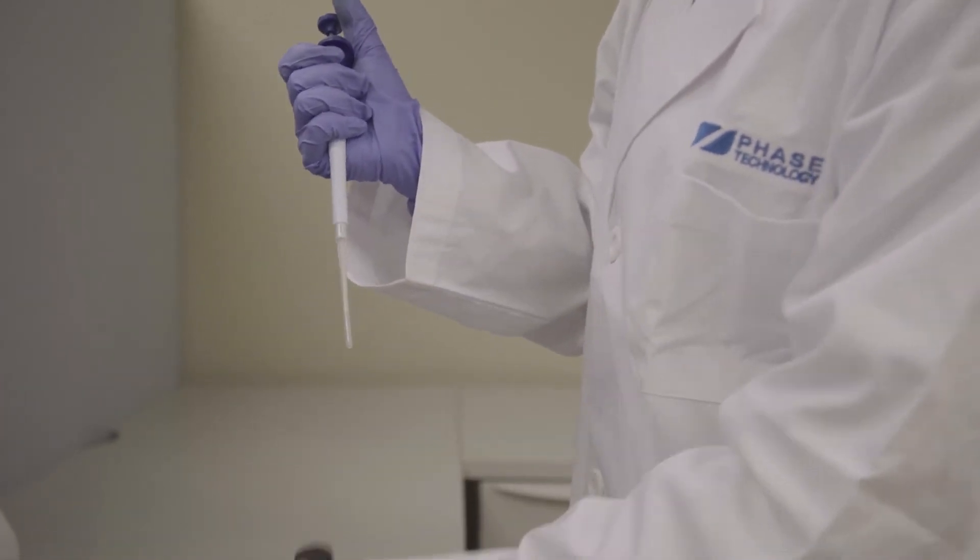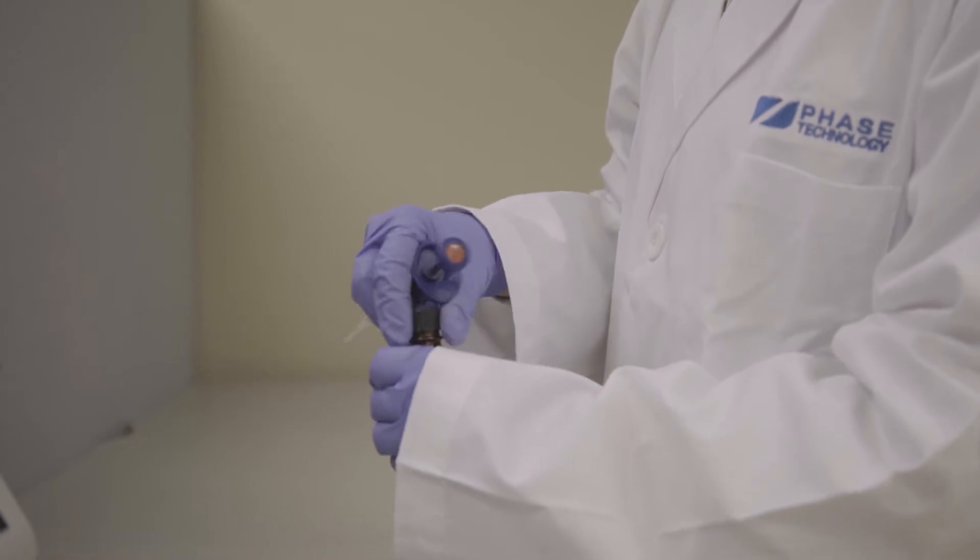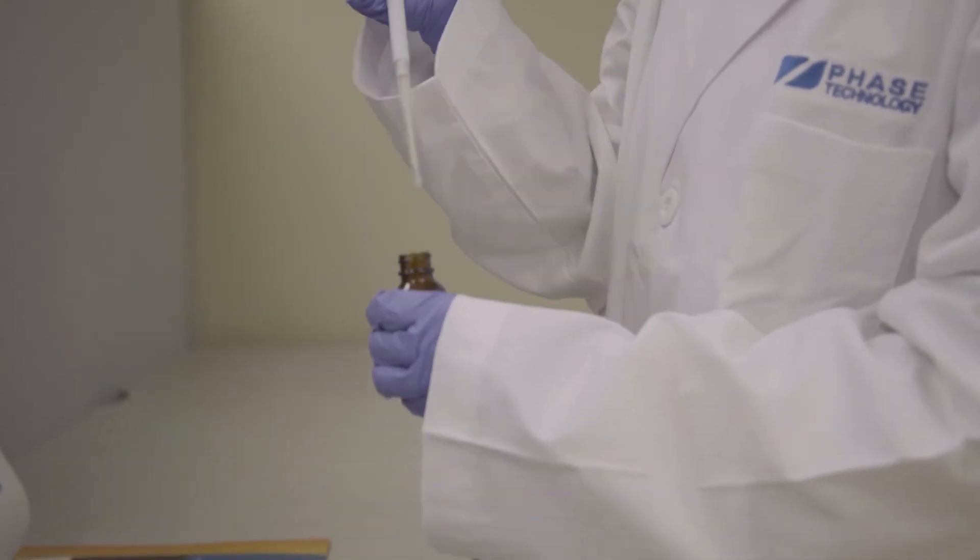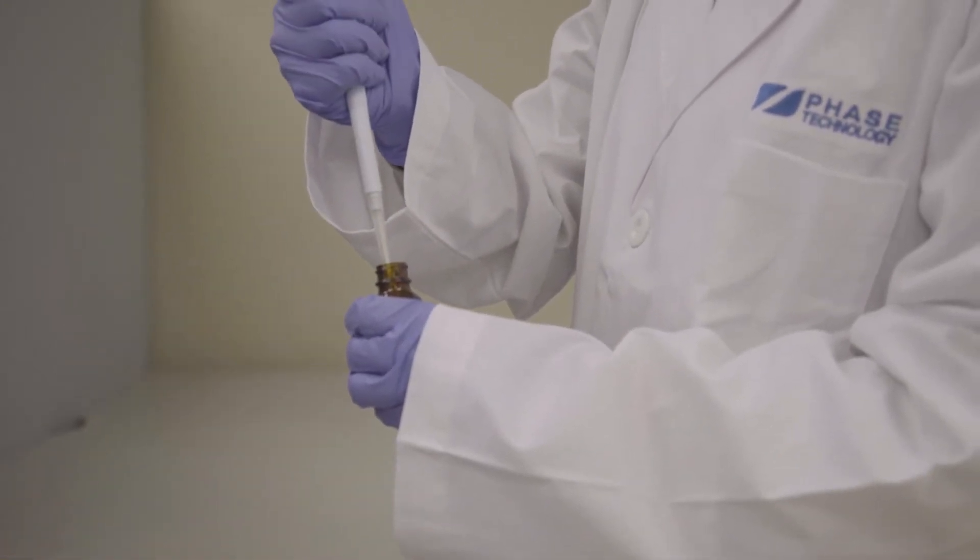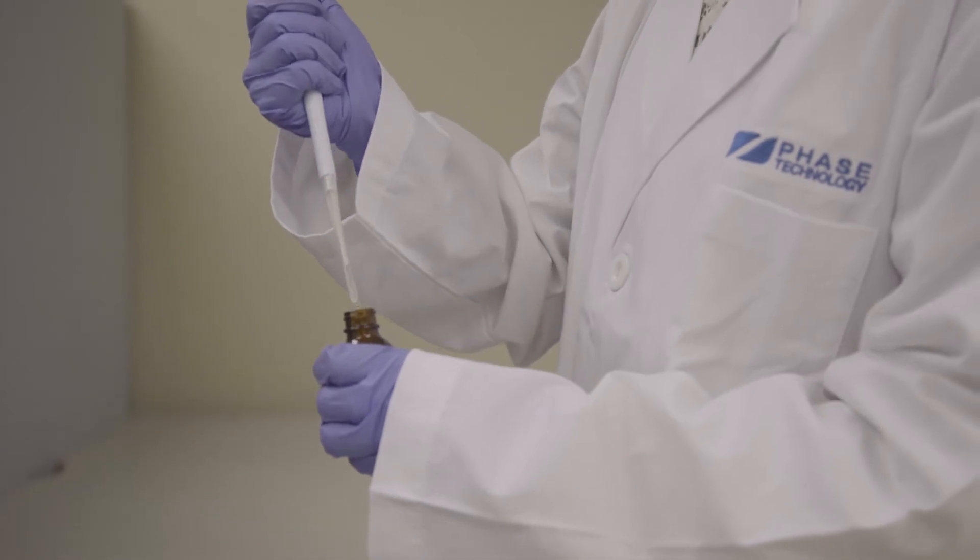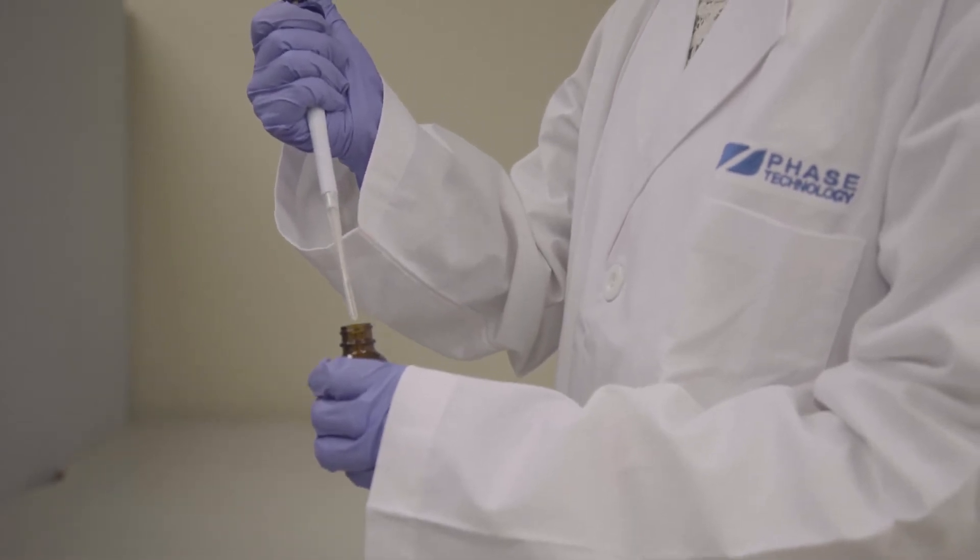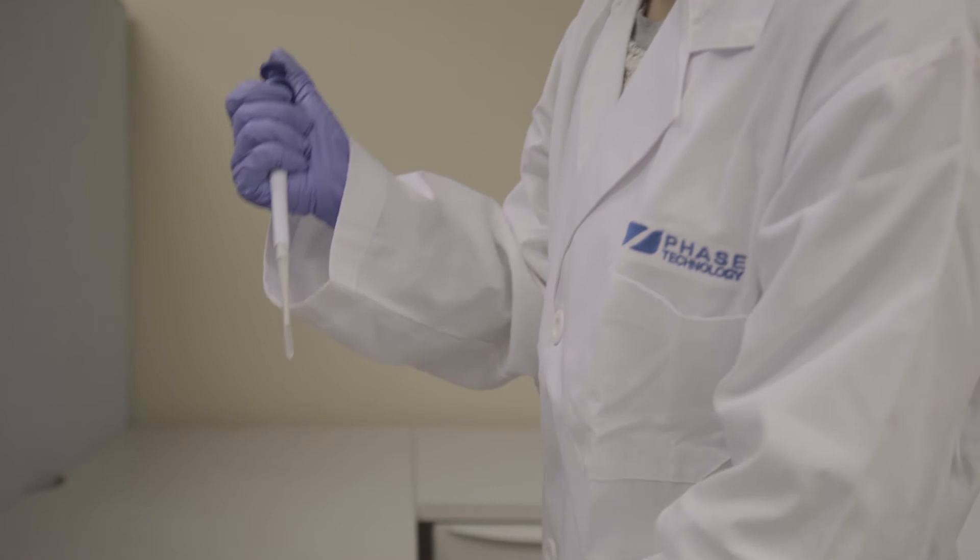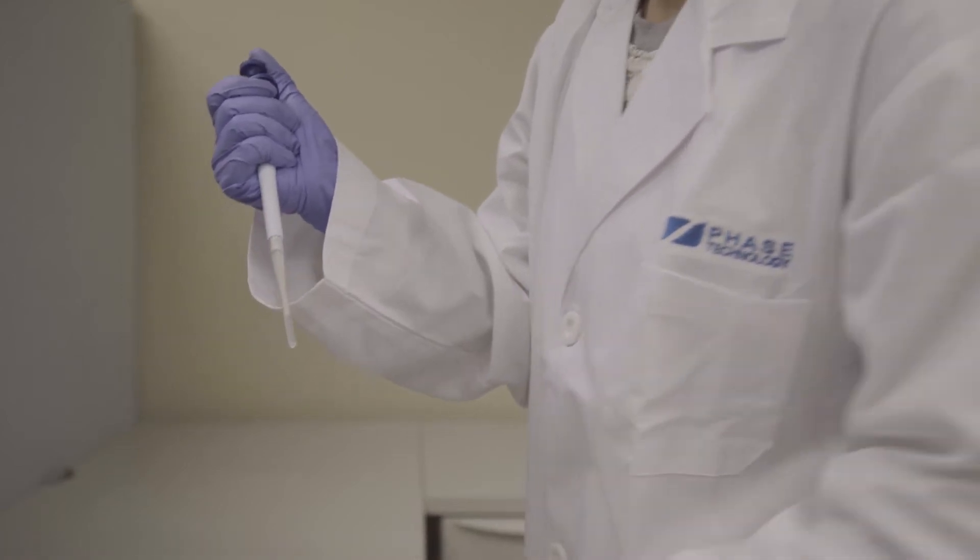Fill the pipette with 150 µL of sample by gently pressing the plunger down to the first stop. Immerse the pipette tip into the sample and slowly release the plunger to draw sample into the tip. Make sure there are no air bubbles visible on the tip.